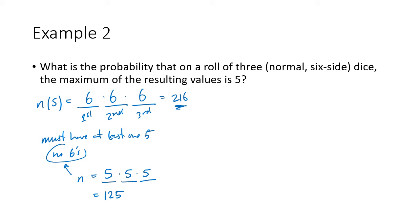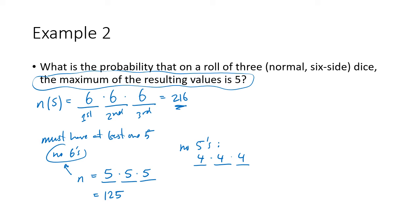Among those 125 possibilities are some where we didn't roll any fives, but we need at least one five for the maximum to be five. So we subtract off how many possibilities have no fives. Since we already excluded sixes, each die only has four possibilities (1, 2, 3, or 4), giving 4 × 4 × 4 = 64. We subtract: 125 − 64 = 61 possibilities with no sixes but at least one five. So our probability is 61 divided by 216.